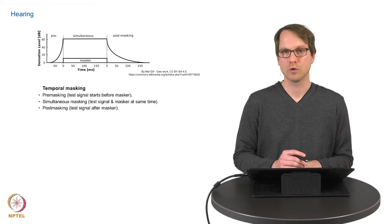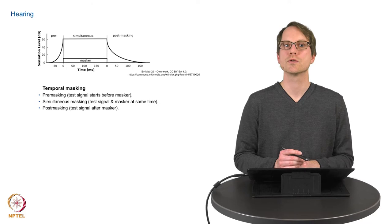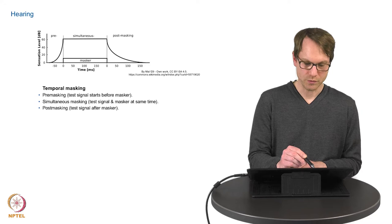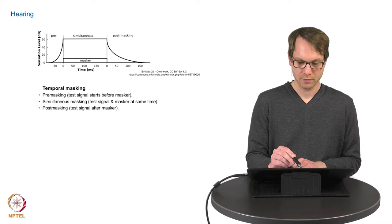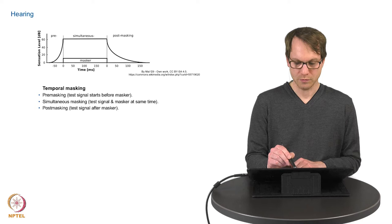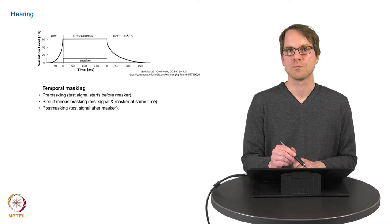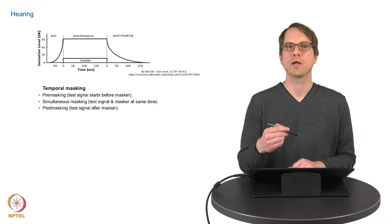We also have temporal masking. So this means that this spectral masking occurs not only when the two sounds, the masker and the other tone are at the same time. But if you consider a masking sound as this block, there will be also masking of a secondary tone if the secondary tone occurs after the masking tone has stopped or even before. So this might be puzzling. But this is a direct consequence of the processing of this information in the basilar membrane and over the auditory nerve and auditory cortex.